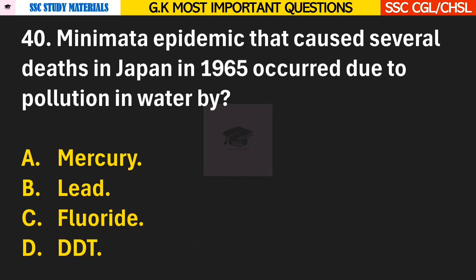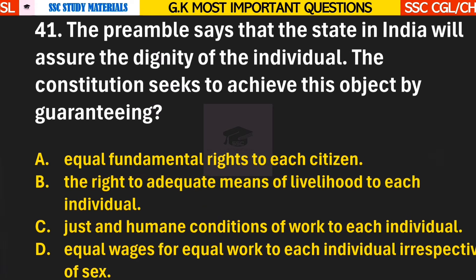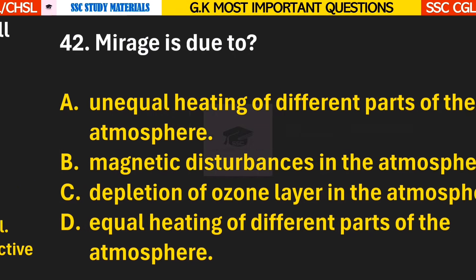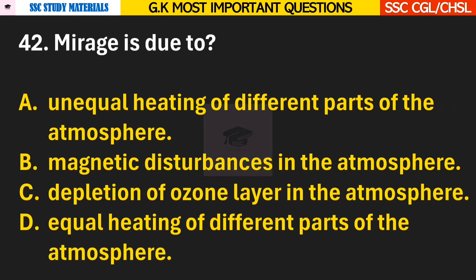Question 40: Minamata epidemic that caused several deaths in Japan in 1965 occurred due to pollution in water by? Answer A — Mercury. Question 41: The preamble says that the state in India will assure the dignity of the individual; the constitution seeks to achieve this object by guaranteeing? Answer A — Equal fundamental rights to each citizen. Question 42: Mirage is due to? Answer A — Unequal heating of different parts of the atmosphere.